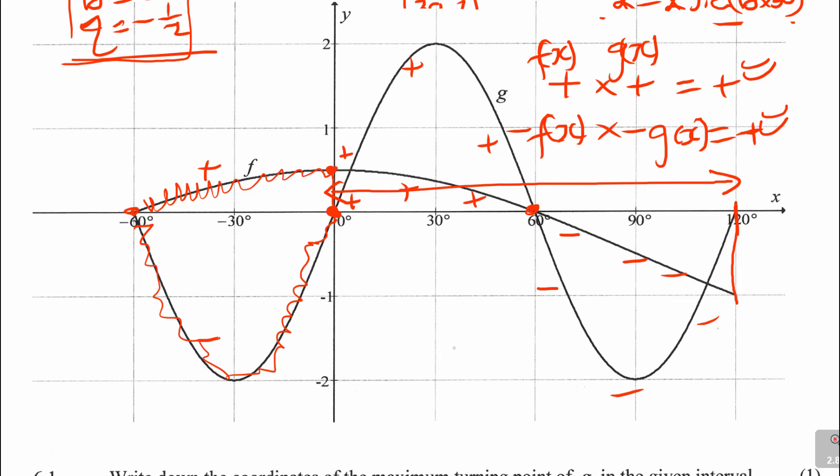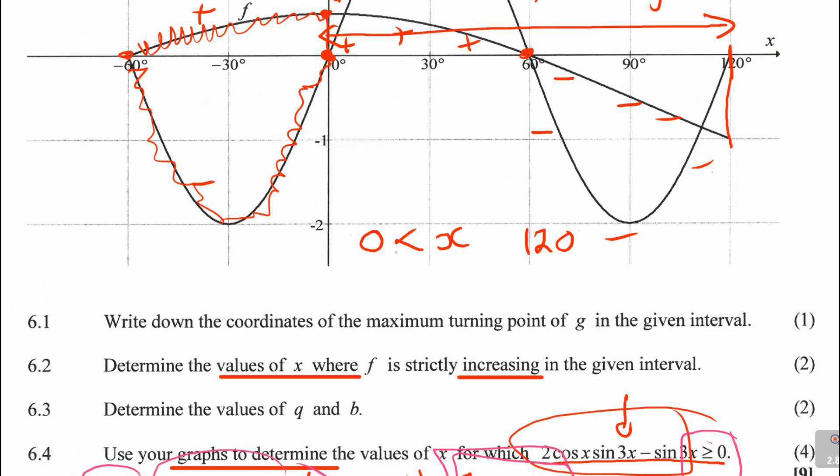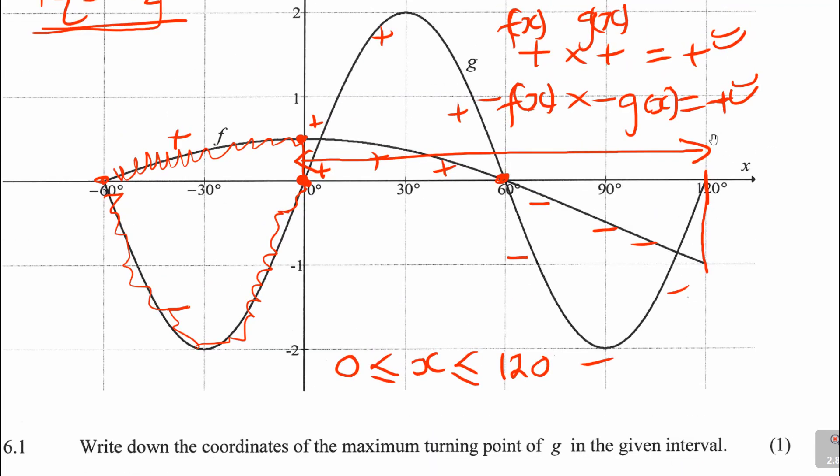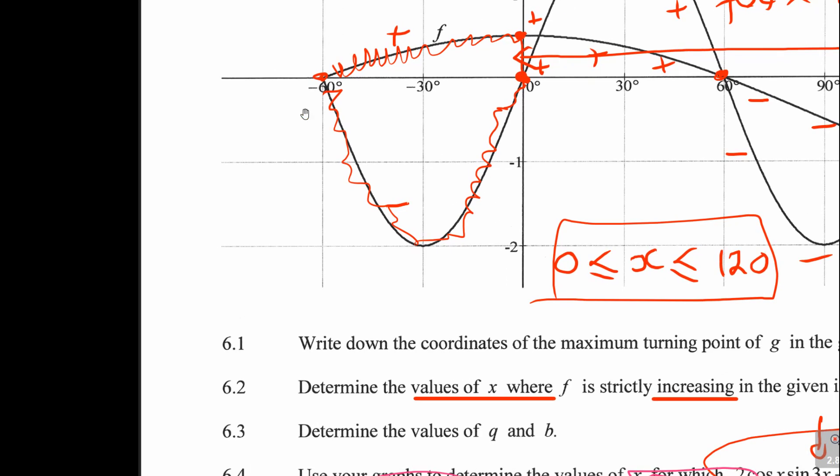This is the region they are interested in, from here to here. How do you write it? You write it starting from 0, ending in 120. The question asked for the values of x, so you write: 0° ≤ x ≤ 120°. Why less than or equal to? Because the sign has that equal to. If they wanted where the graph was less than 0, then you'd choose the area with positive and negative, giving -60° to 0°.